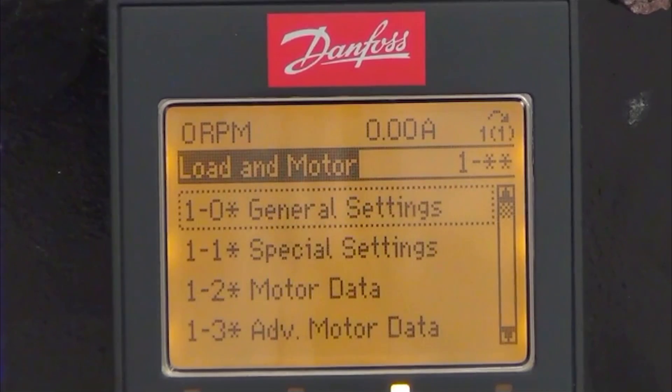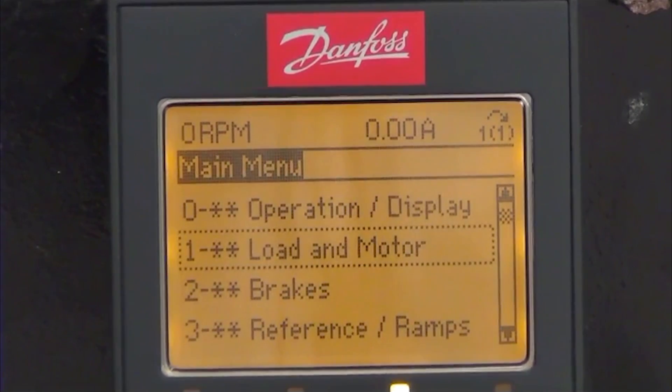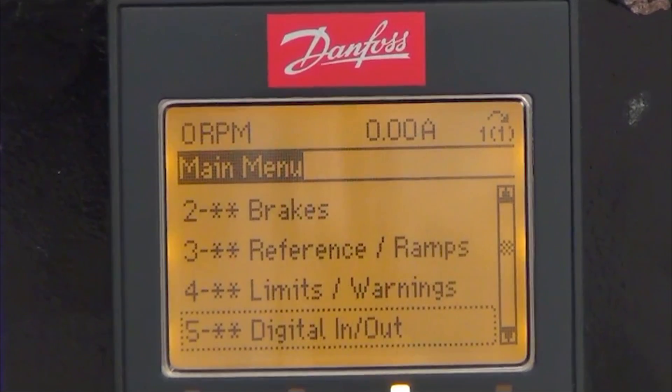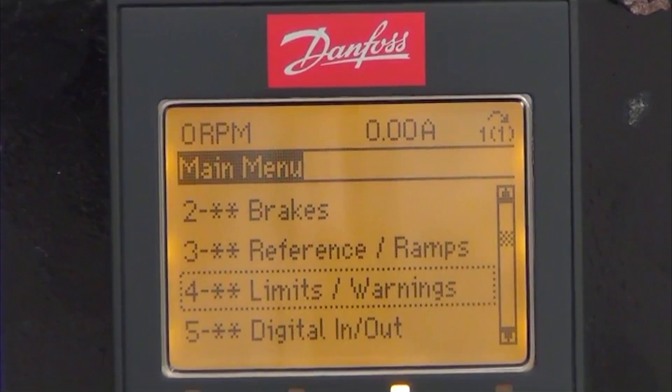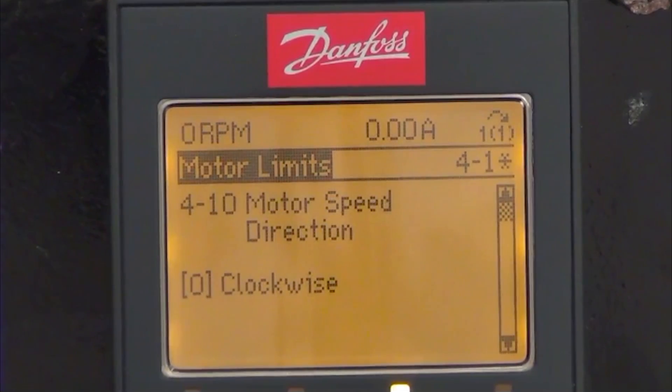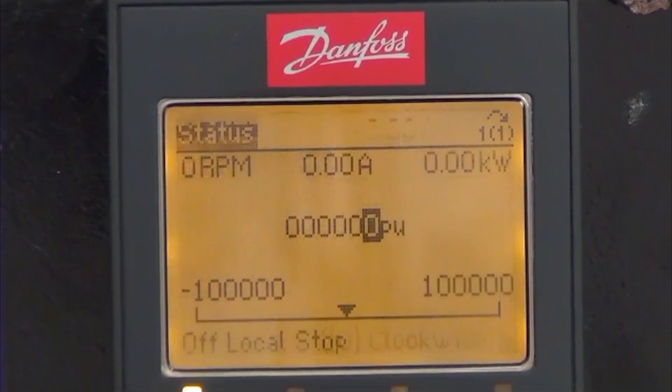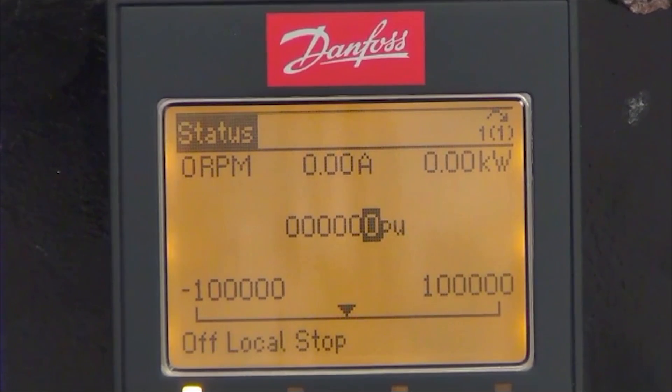So now we are in positioning mode. I will go two steps back and then go into group 4, limits and warnings, because as default, the motor is only allowed to rotate clockwise. For this application, we need to operate in both directions. So I just need to select both directions, which will allow me to run the motor in both directions.